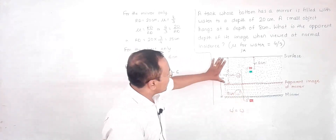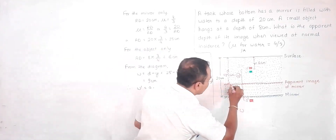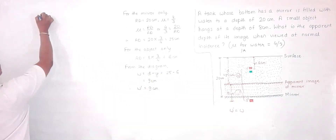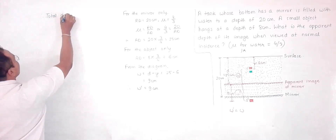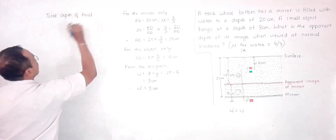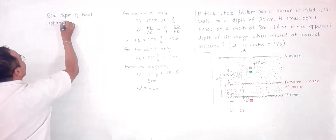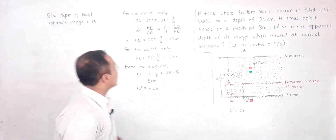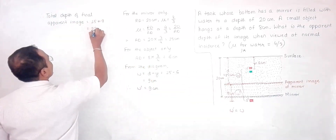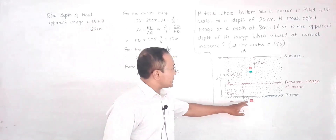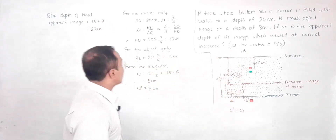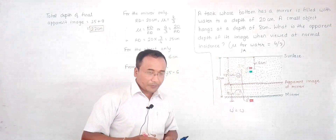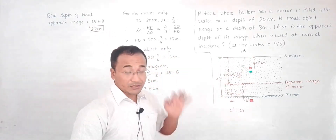Since W' equals 9 centimeters, the image lies 9 centimeters above the apparent mirror position. The apparent mirror is at 15 centimeters and the image is 9 centimeters above it, so the total apparent depth of the final image = 15 + 9 = 22 centimeters. This is the apparent depth of the image as seen from the surface — which is the answer.